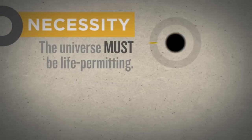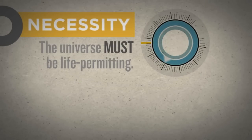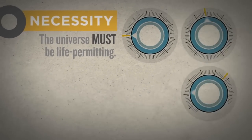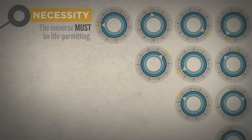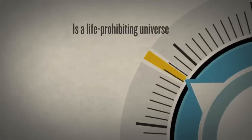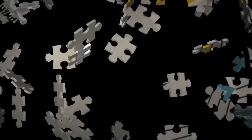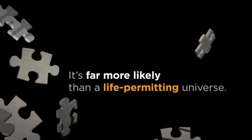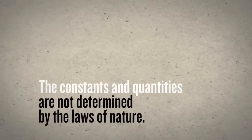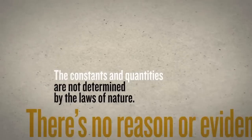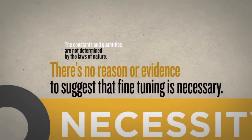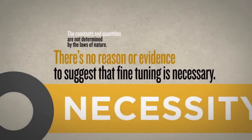According to the first alternative, the universe must be life permitting — the precise values of these constants and quantities could not be otherwise. But is this plausible? Is a life-prohibiting universe impossible? Far from it. It's not only possible, it's far more likely than a life-permitting universe. The constants and quantities are not determined by the laws of nature, and there's no reason or evidence to suggest that fine-tuning is necessary.